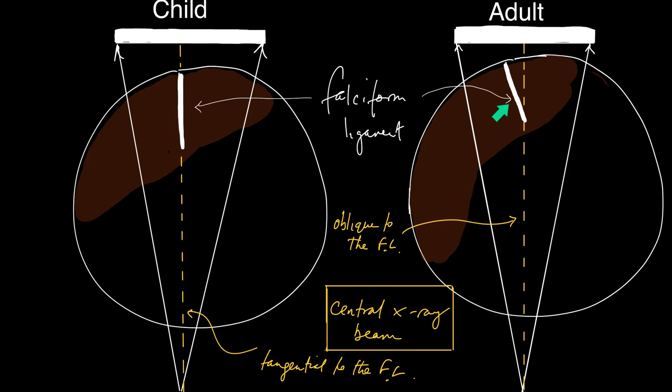the falciform ligament is oblique to the beam. And that's why it's hardly ever seen in cases of pneumoperitoneum.